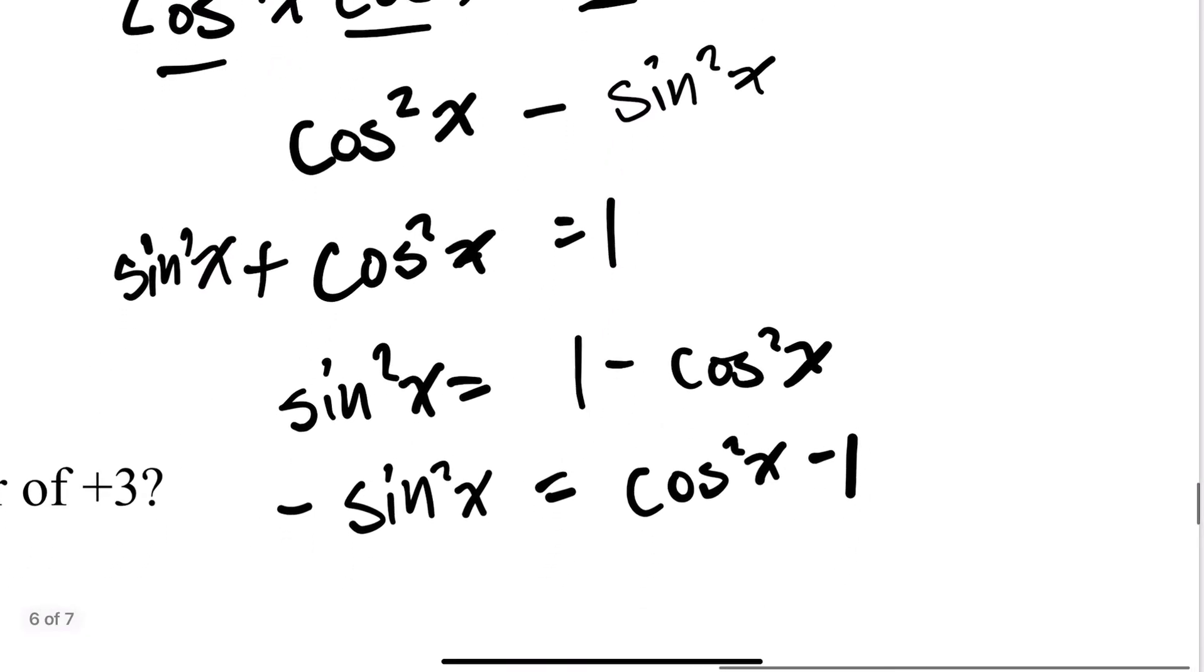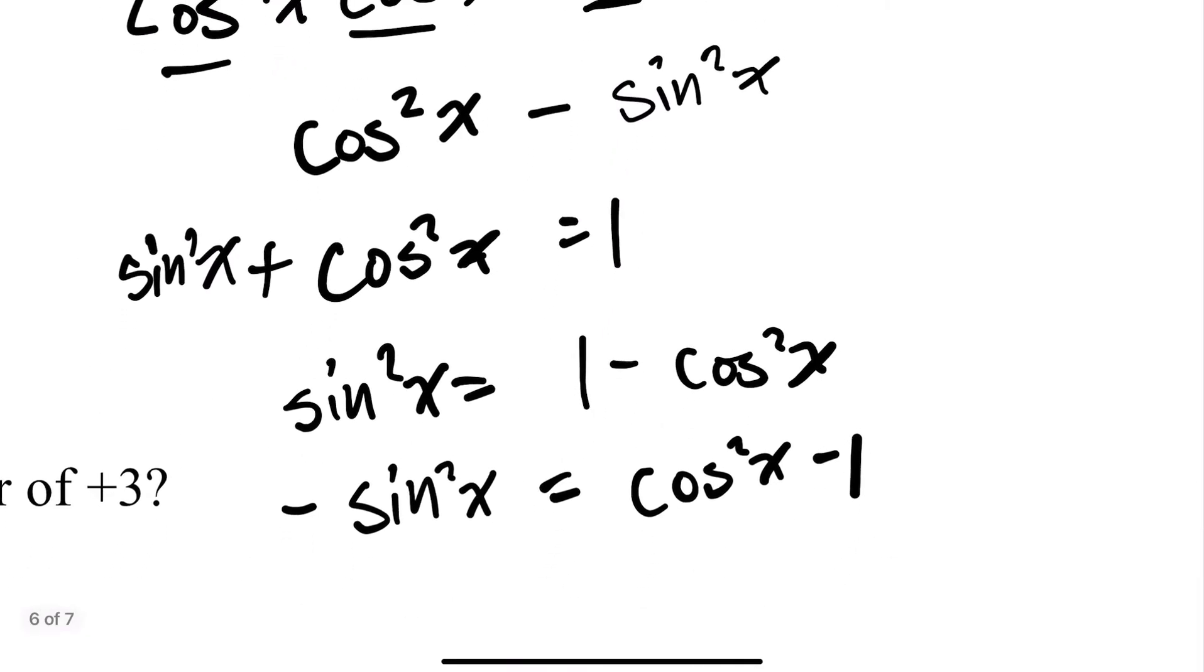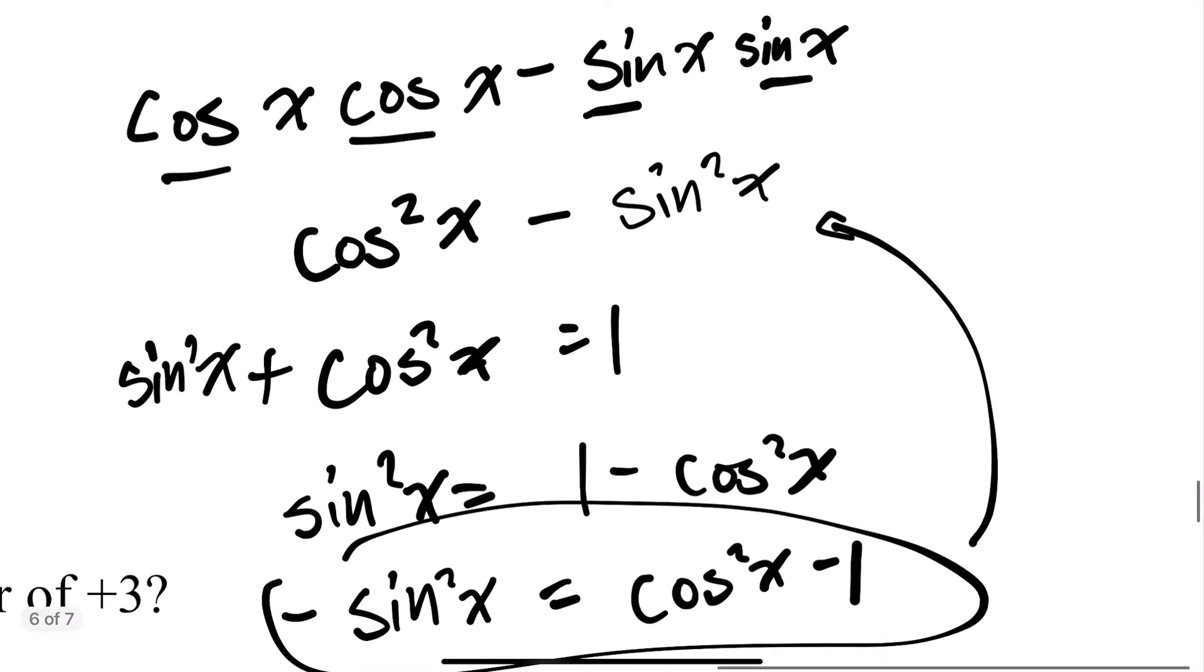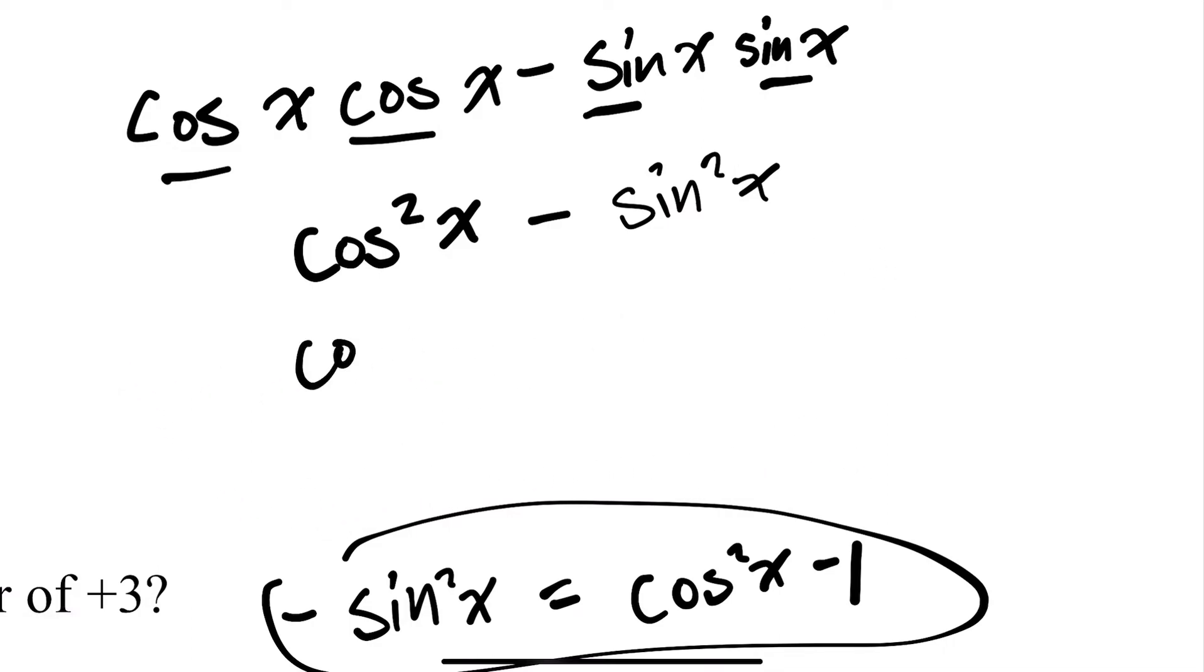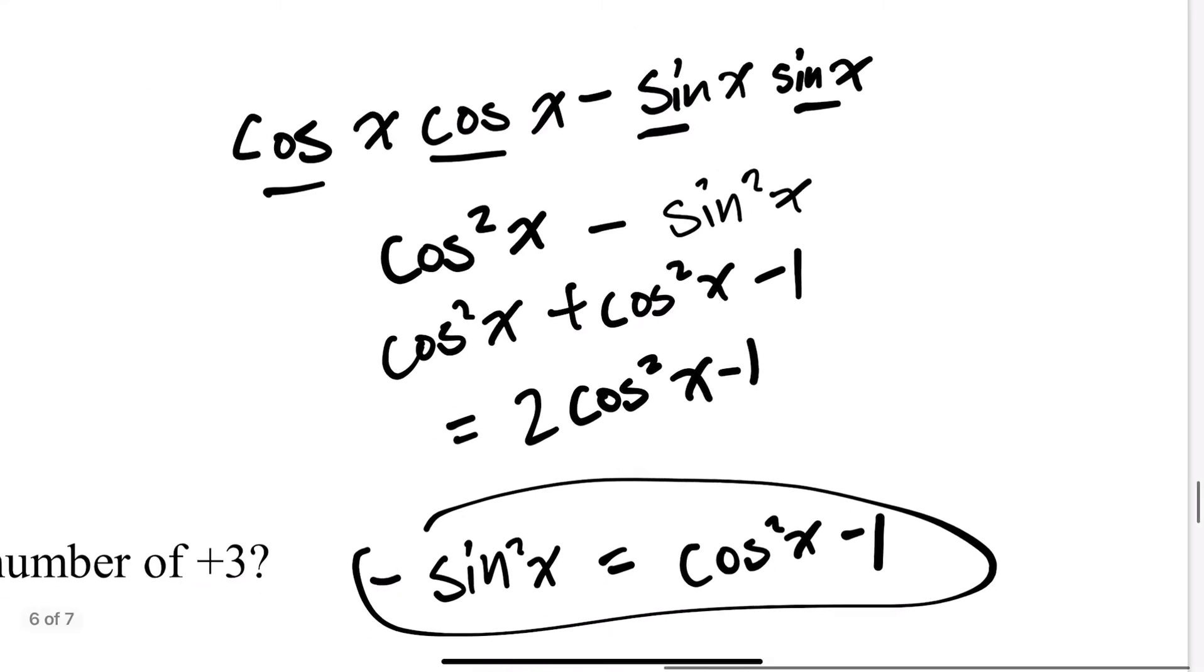So if we substitute this here, what we get is cosine squared x plus cosine squared x minus 1. So that is 2 cosine squared x minus 1.